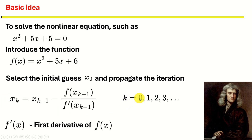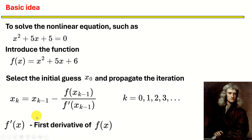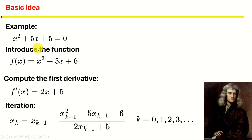We propagate this iteration for k equal to 1, 2, 3, etc. For example, x1 is x0 minus f of x0, which is the value of f at x0, divided by f prime of x0, where f prime is the first derivative of f of x. We iteratively perform this recursion: compute the first derivative, divide the function by its first derivative, and then update x_{k-1}.